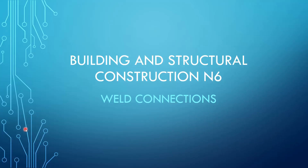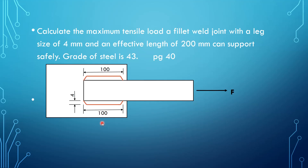Hi everyone, this is Chauke speaking. I'll be taking you through Building and Construction, Structural Construction level 6. The topic will be weld connections. I took a question from your book found on page 40. It asks: calculate the maximum tensile load that a fillet weld joined with a leg size of 4 millimeters and an effective length of 200 millimeters can support. The safety grade of steel is 43.